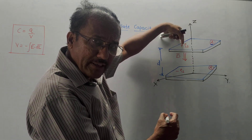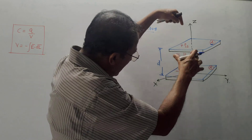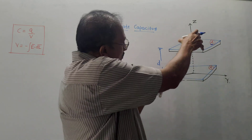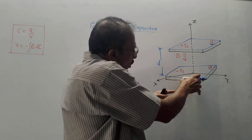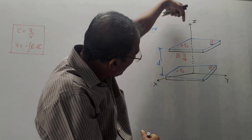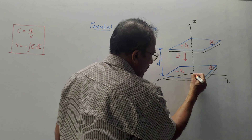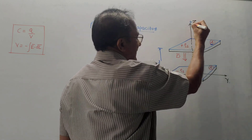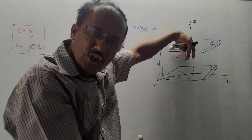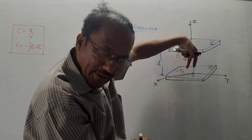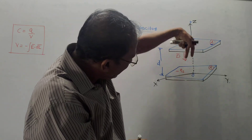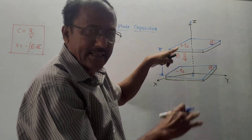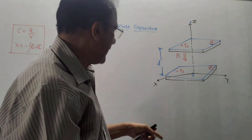Plus ρs is deposited on the upper plate, so we are assuming that the flux density D-bar moves from the upper plate to the lower plate. That means it is along the negative z-axis, because this is the origin and in the upward direction we have the plus z-axis. Since D-bar is moving from upper plate to lower plate, it is in the downward direction — that means along the negative z-axis. So the direction of D-bar is minus az-bar.